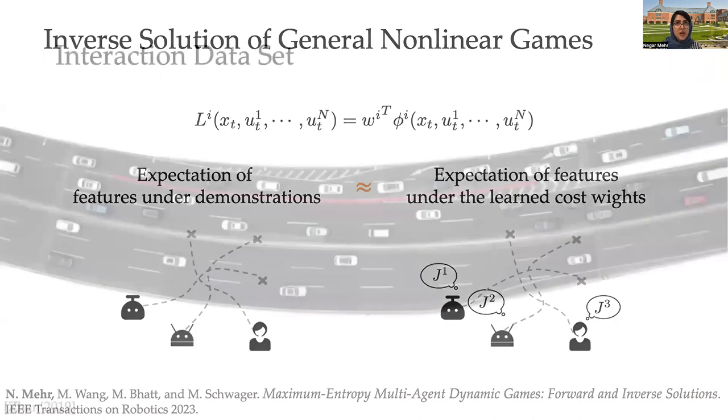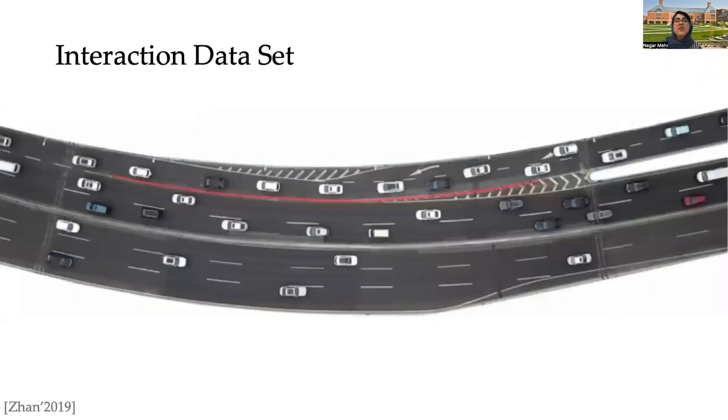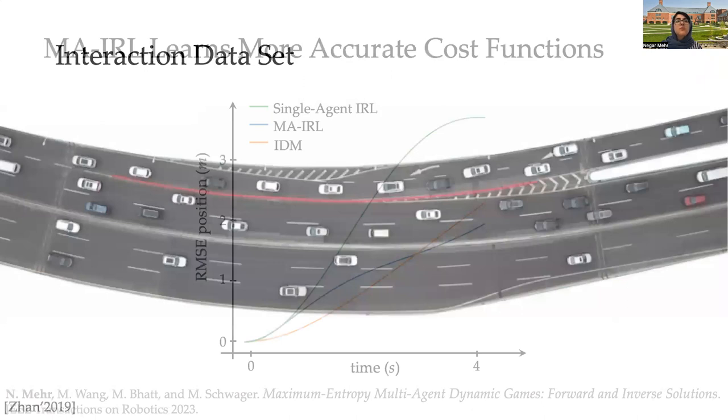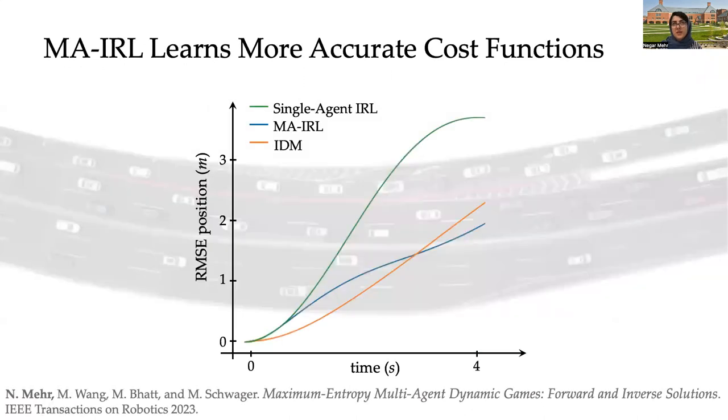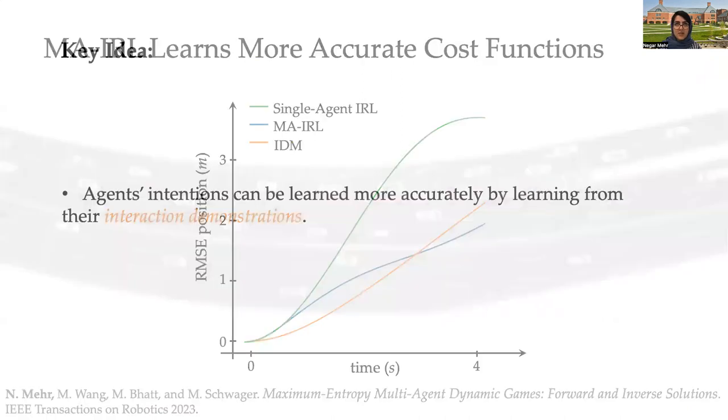And we show through our verification and simulation studies with real-world traffic datasets that, in fact, we managed to learn more accurate objectives of the agents by trying to learn from demonstrations of their multi-agent interactions rather than learning from agents in isolation.